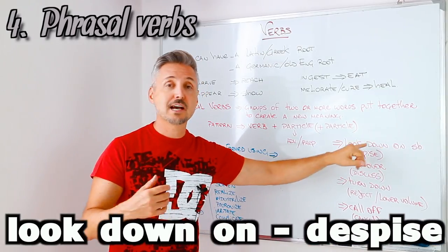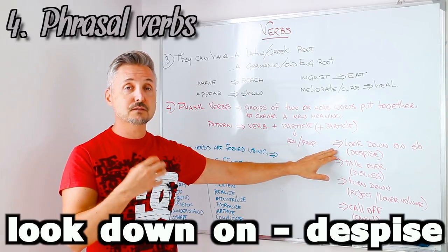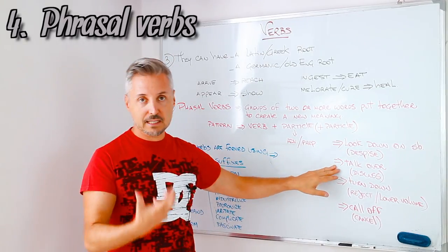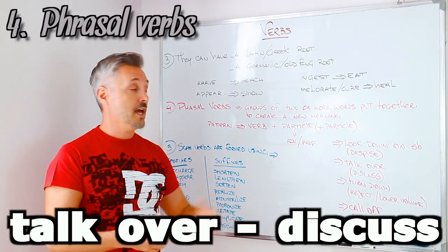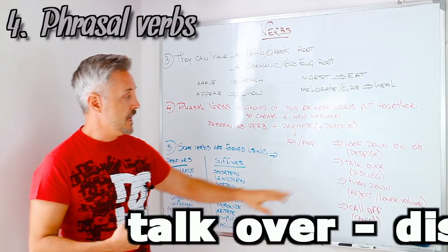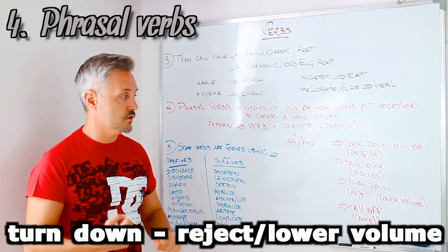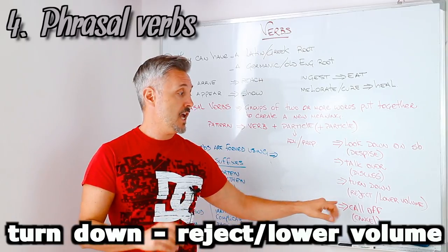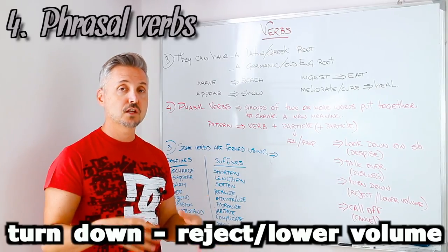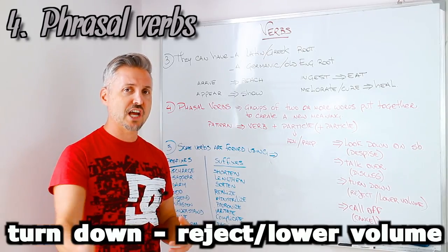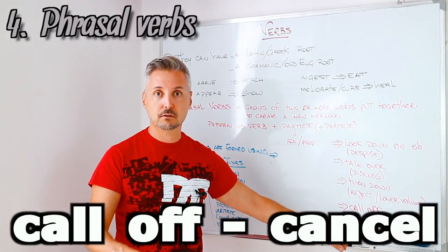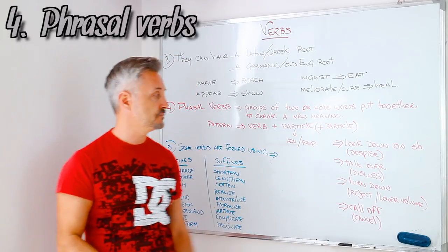So, we have look down on. Look down on somebody. Look down on somebody. If you want to replace this phrasal verb, you can replace it with despise, which comes from Latin. Despise. Now, another example could be talk over. Talk over. And the Latinate verb could be discuss. Then, another one could be turn down. Turn down. Turn down can have two meanings, right? And we know that turn down the volume, for example. Lower the volume. Or, reject. Turn down an offer for a job, for example. I rejected the job. Turn down. And then, we have call off. Cancel. Cancel. Call off. Cancel.